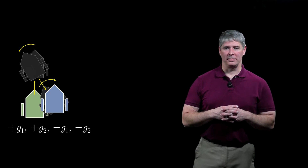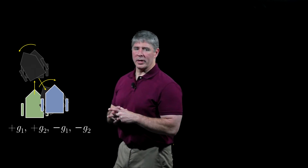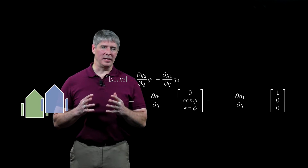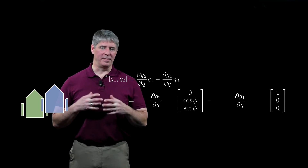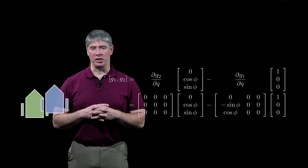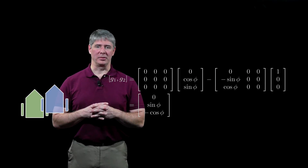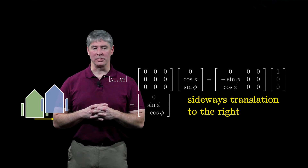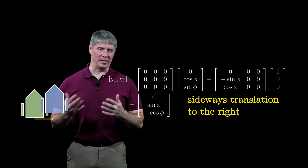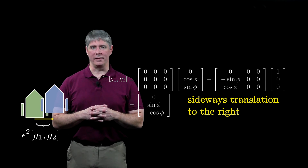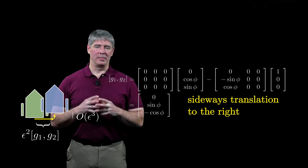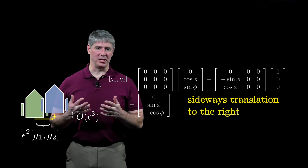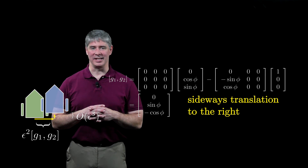The Lie bracket sequence for the canonical mobile robot is illustrated here. We can calculate the Lie bracket of g1 and g2 using the formula we just derived. Plugging in the expressions for g1 and g2 and evaluating the derivatives with respect to the configuration q, we see that the Lie bracket vector field is (0, sin φ, −cos φ), which is a vector field describing a sideways translation to the right. The actual net motion, as seen in the figure, consists of a translation to the right of epsilon squared times the Lie bracket, plus a small forward translation of order epsilon cubed. The Lie bracket vector field of g1 and g2 effectively breaks the constraint that the robot cannot slide sideways, ensuring that the velocity constraint does not integrate to a configuration constraint.